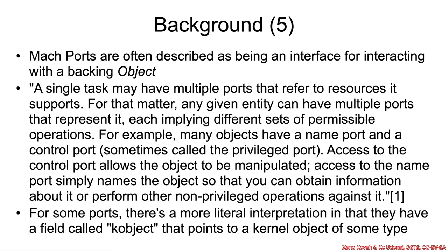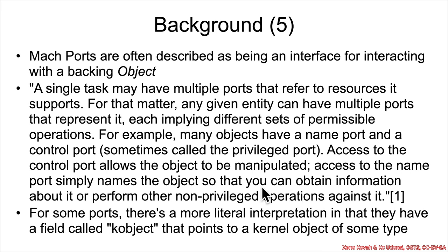Part of the reason XNU so frequently has type confusion vulnerabilities is because they think of it as object-oriented and design it that way — not in the sense that it's all C++ code, but they refer to the objects backing a Mach port as being an object. To quote: a single task may have multiple ports that refer to resources it supports; any given entity can have multiple ports representing it, each implying different sets of permissible operations. Many objects have a name port and a control port — sometimes called the privileged port — where access to the control port allows the object to be manipulated, and access to the name port simply names the object.